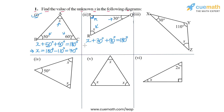30 plus 90 is 120. So from here we can write x will be equal to 180 minus 120, which will become equal to 60 degrees. So 60 degrees is the answer for part 2.